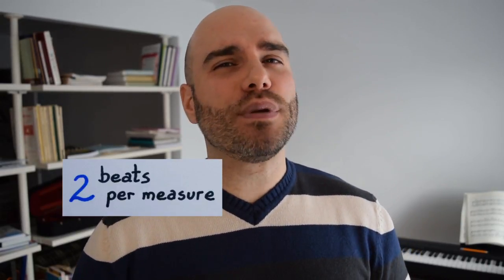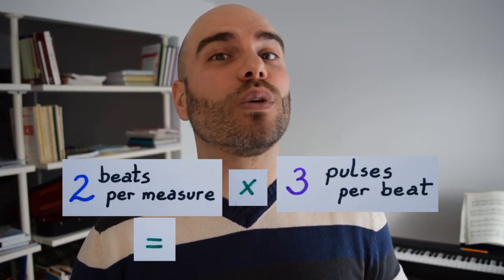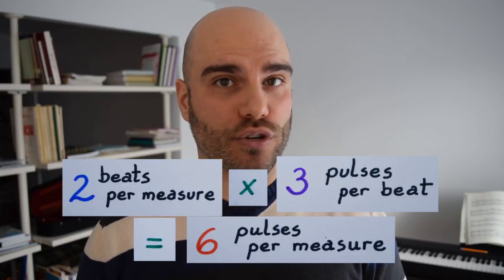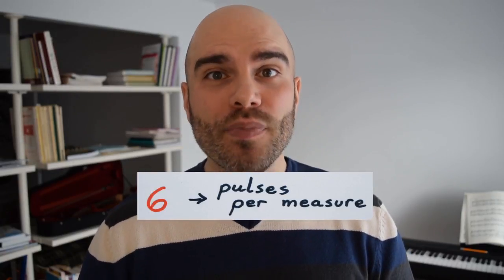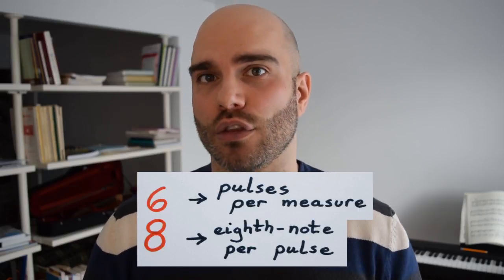Since we have two beats per measure and each beat contains three pulses, we all together have two times three equals six pulses per measure of music. So, let our time signature be a six as the top number and an eight as the bottom number, since each pulse gets an eighth note.